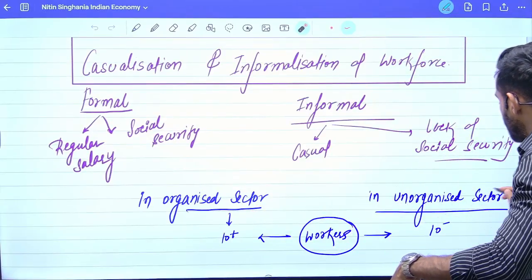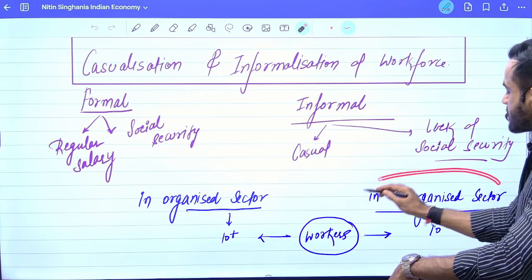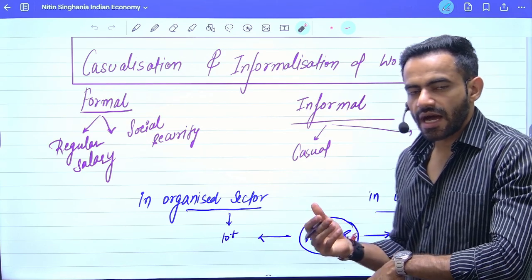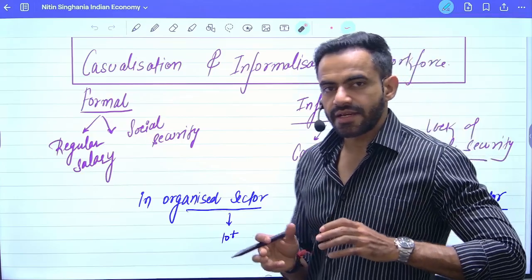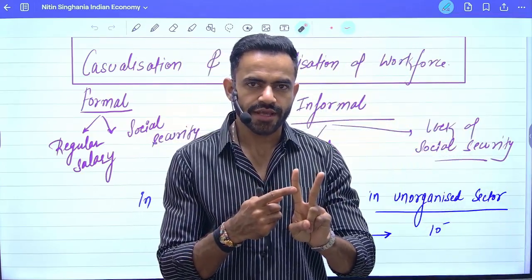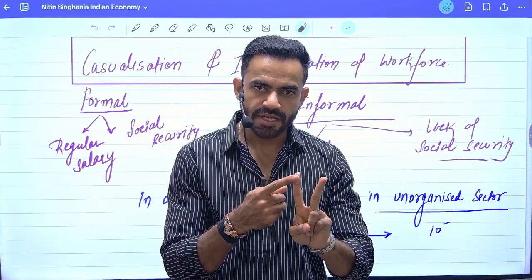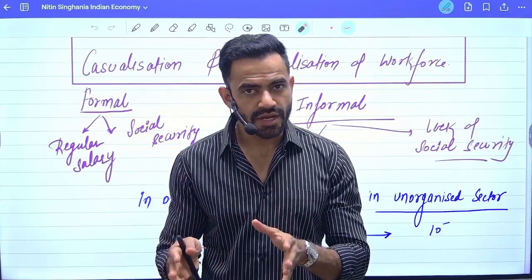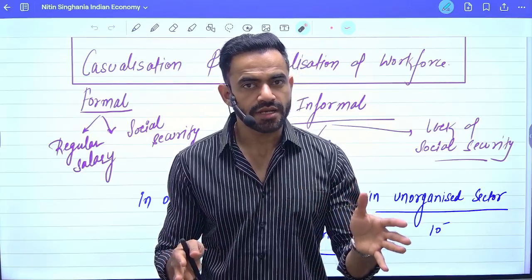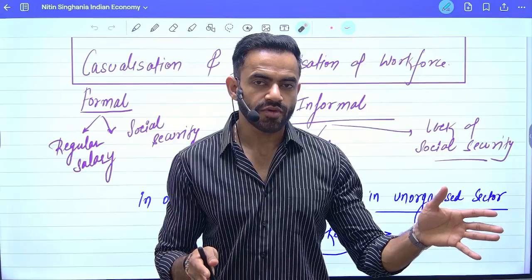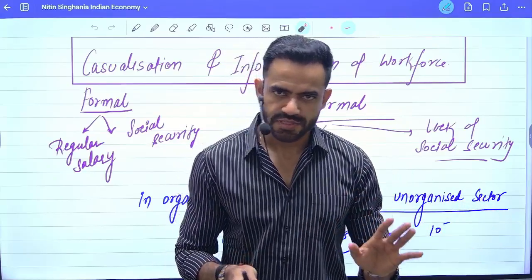Then there is the unorganized sector. Unorganized sector basically means on paper the number of employees are less than 10. So organized basically means more than 10 employees, and in the unorganized sector the number of employees are less than 10. That's the first thing.